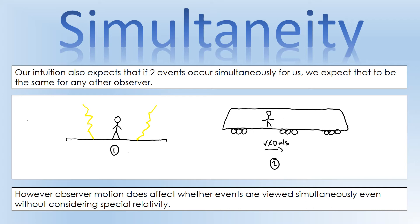Before I introduce special relativity, I want to talk about simultaneity — whether things are simultaneous or not. Intuitively we might think that if something is simultaneous for us it should be simultaneous for everyone else, because we think everyone should agree on time. But actually that's not necessarily the case. Let's imagine a person standing on a platform — another thought experiment — and lightning strikes on either side of them equidistant from the observer, with a second observer on a train going past that platform. Person one is going to see the two lightning strikes at the same time because they're equidistant, so to them things occur simultaneously.